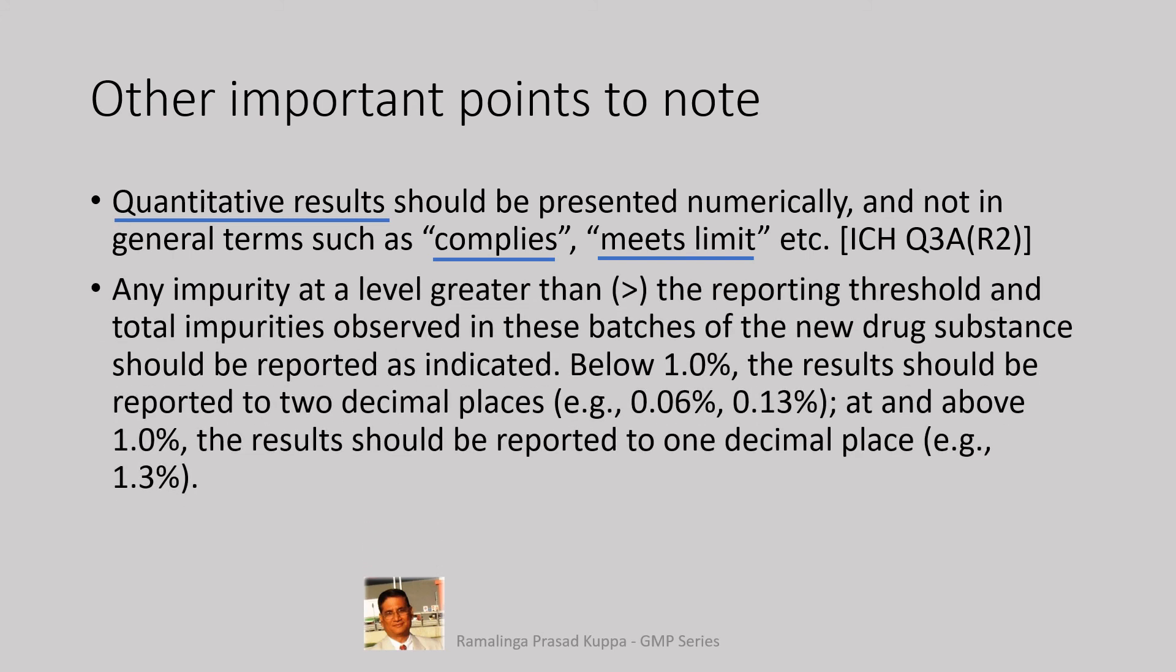Any impurity at a level greater than the reporting threshold and the total impurities observed in these batches of the new drug substance should be reported as indicated. Below 1% the result should be reported to 2 decimal points, and above 1% the results should be reported to 1 decimal place. ICH Q3A prescribes that any related substances more than the threshold should be reported in 2 digits if the values are less than 1% and 1 digit if the results are more than 1%.